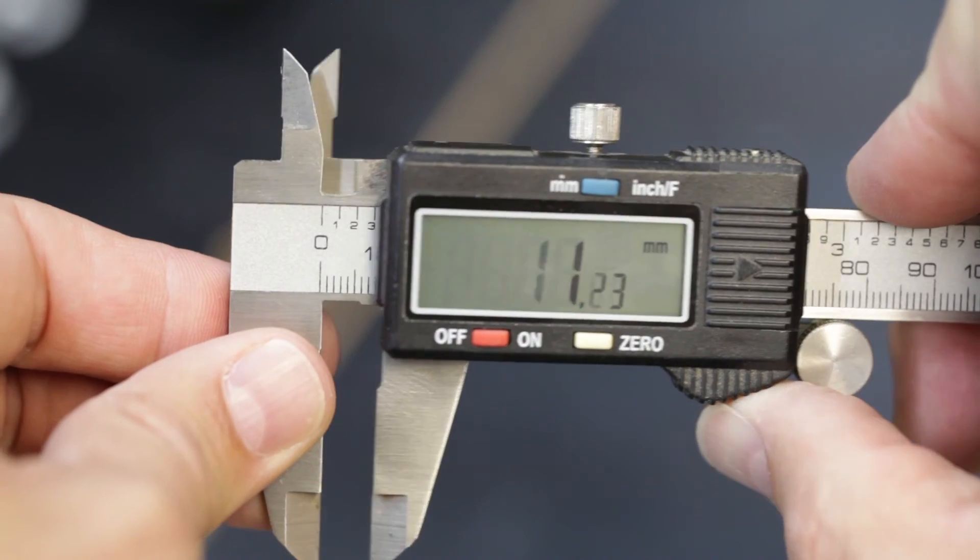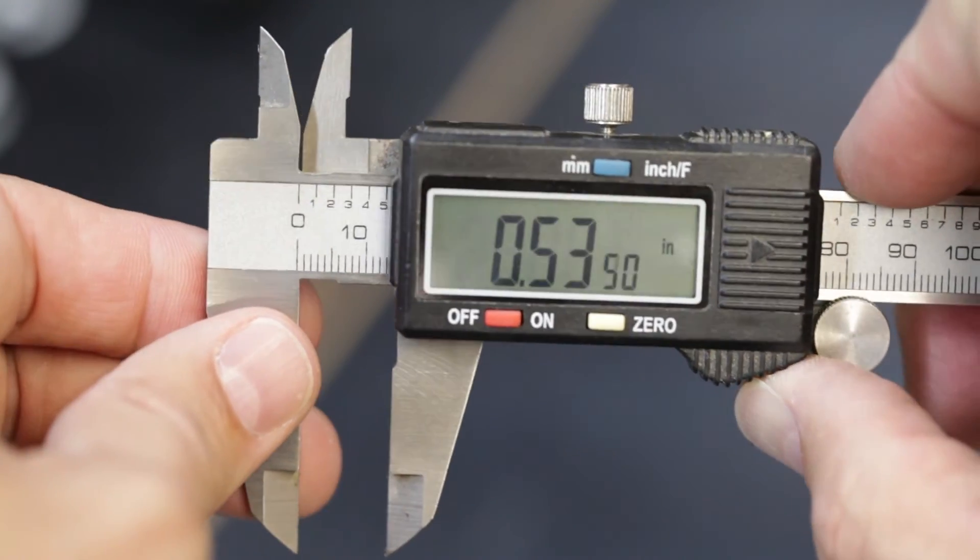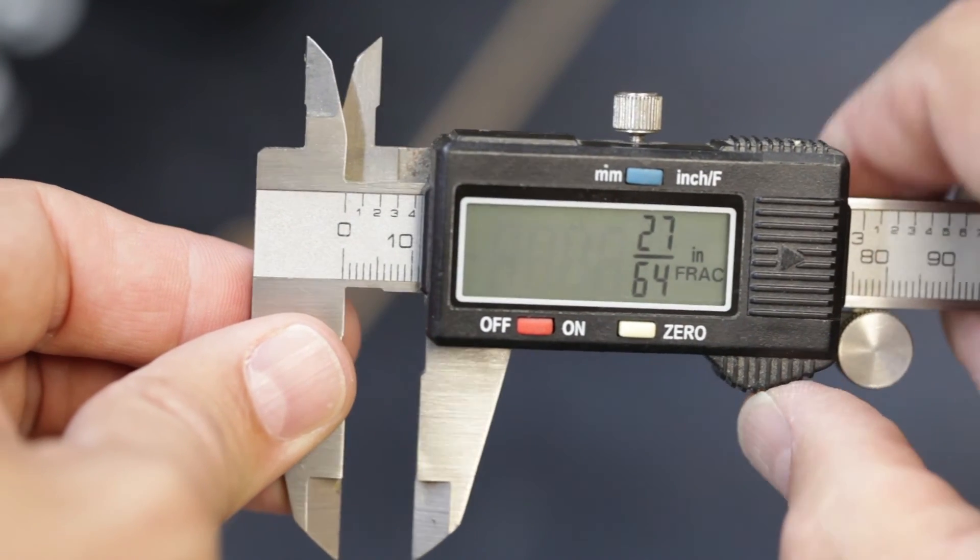They have a units switch that switches between millimeters, inches as decimals, and inches as fractions. So that can be handy, depending on what it is you're measuring, if you're comparing it to other things, and what units you're most comfortable with.